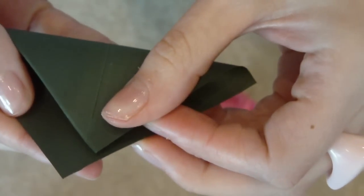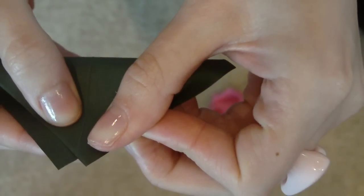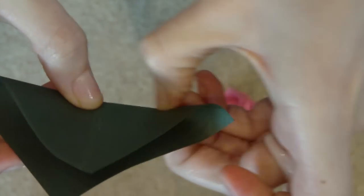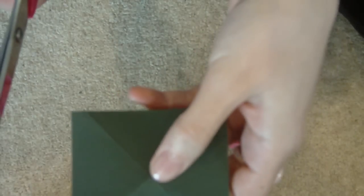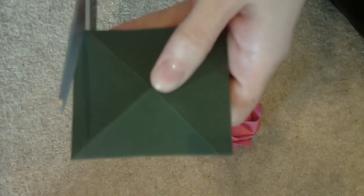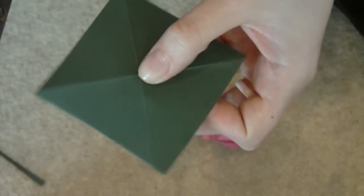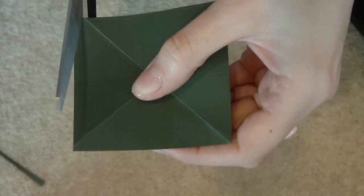When you fold it the other way, just make sure you line up the line rather than the point. So then you can neaten up your cross so that the creases go to the edges.